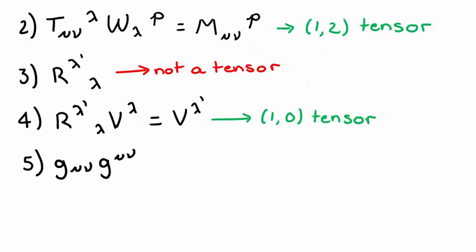Number five has all contracted indices. So we end up with a scalar, or a 0-0 tensor.